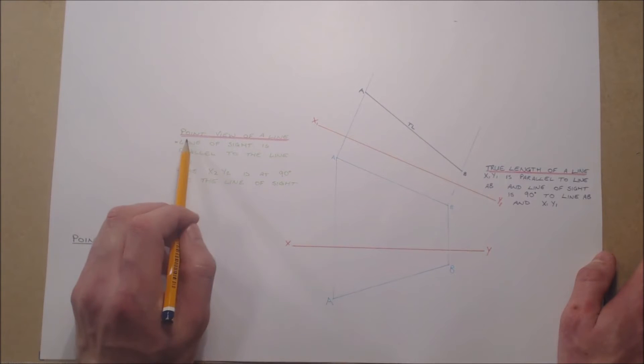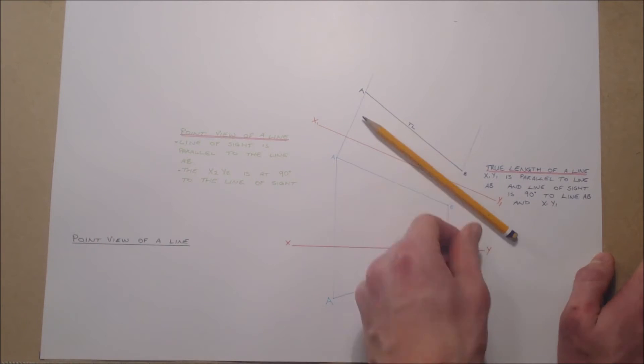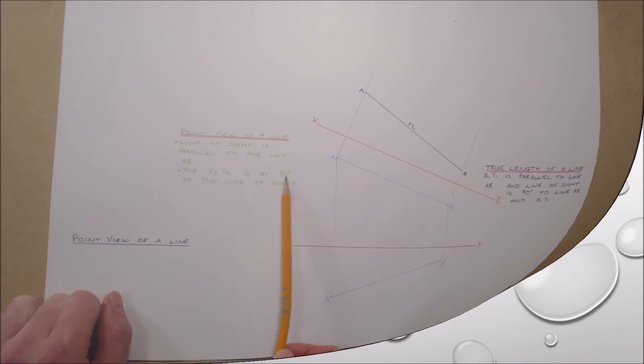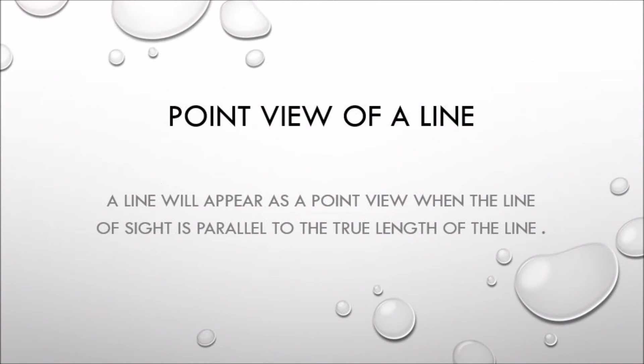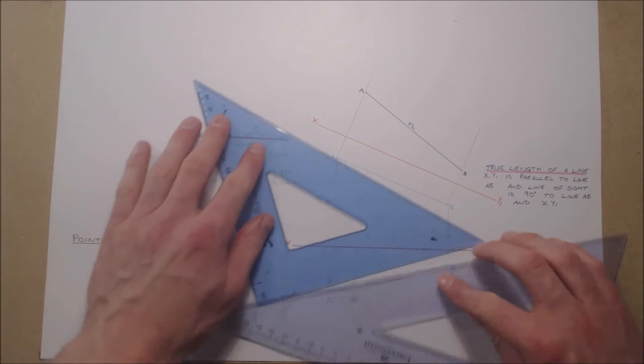The point view of a line occurs when the line of sight is parallel to the true length of the line. Therefore we set up a projection plane perpendicular to the true length of the line.